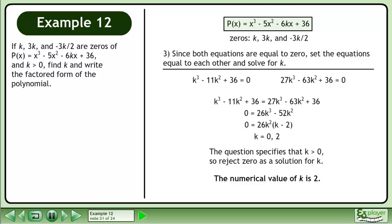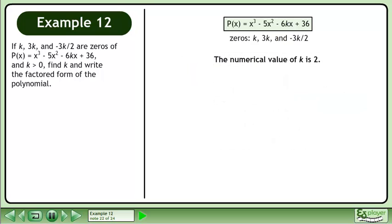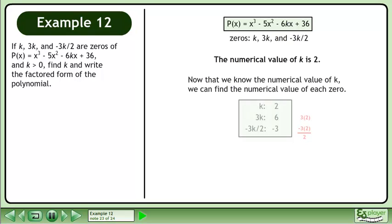The numerical value of k is 2. Now that we know the numerical value of k, we can find the numerical value of each zero. k = 2, 3k = 6, and negative 3k over 2 equals negative 3.